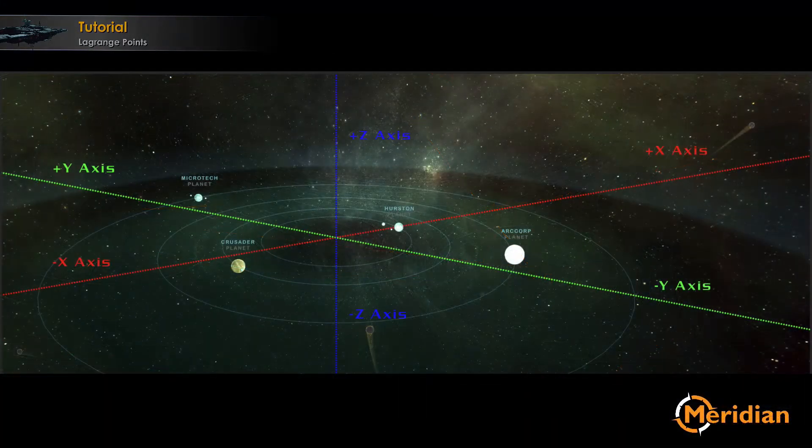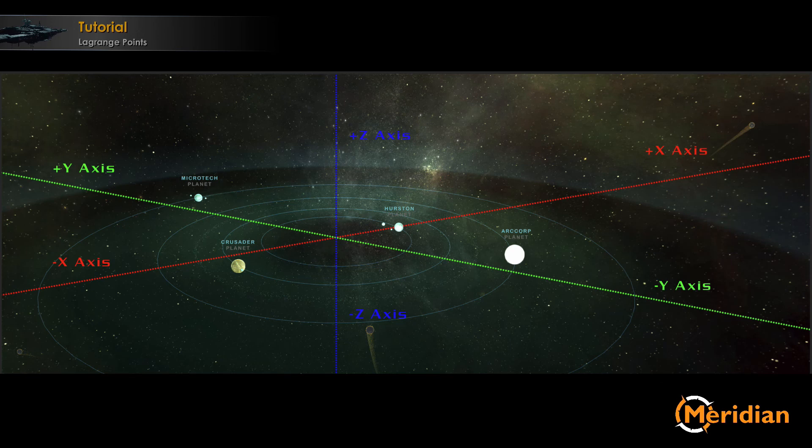And if we take a look at the map from the previous video, we will see that Crusader and Hurston are located on the opposite direction of this star. Therefore, L3 or Lagrange 3 of one planet will be next to the other planet.